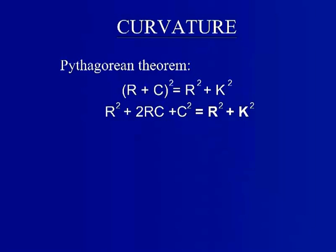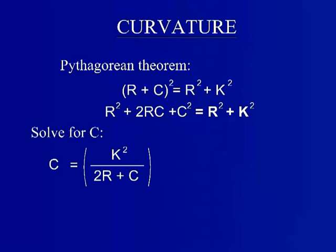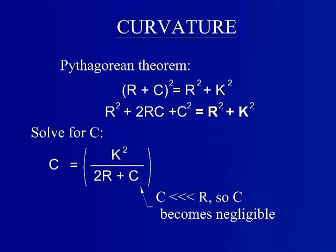Expand the binomial and then solve for c. The c left in the denominator here is added to twice the radius of the Earth. The curvature error, c, is likely only feet or a fraction of a foot. In comparison to the radius of the Earth, about 3,959 miles, this will be nominal and therefore an accurate solution can still be found by excluding it.